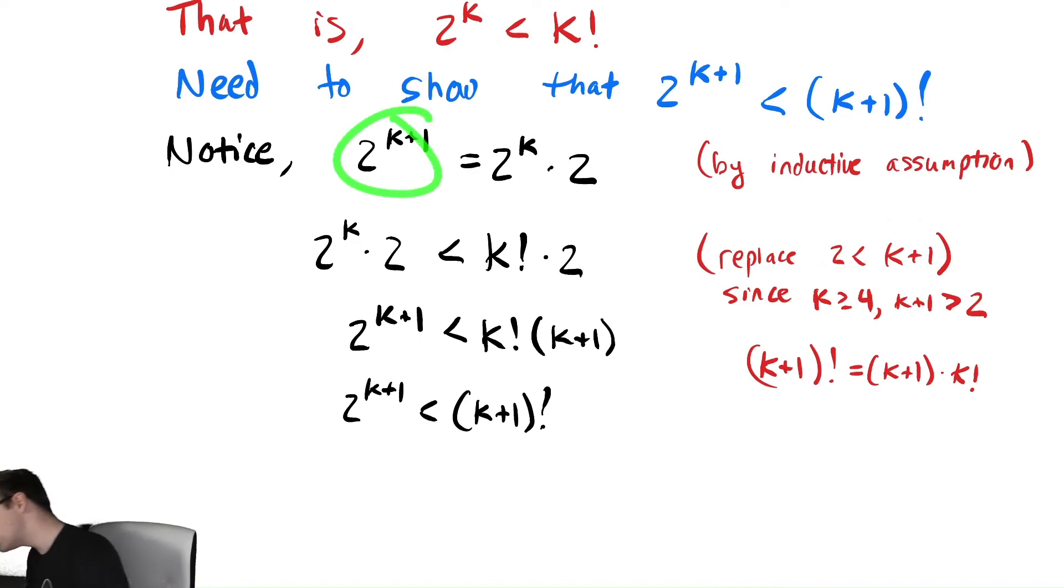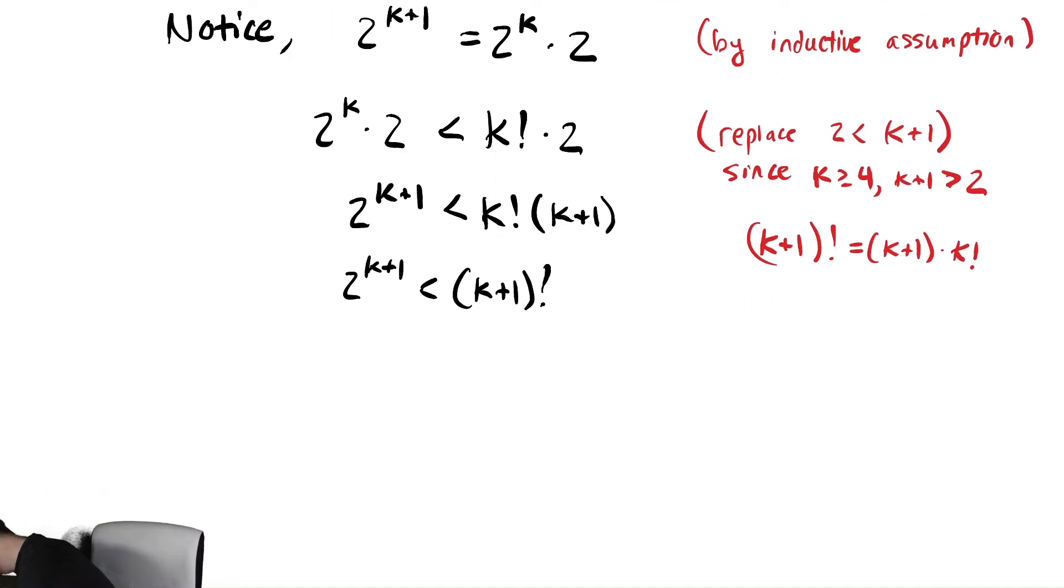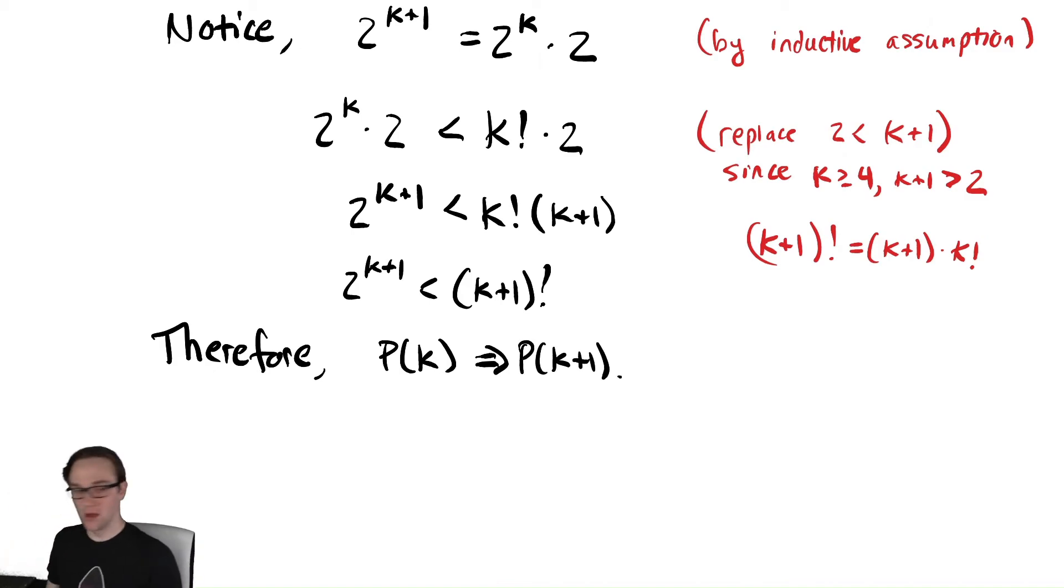So I can rewrite that right hand side is exactly (k+1) factorial. Therefore, starting with 2^(k+1), I used my inductive assumption and I used the fact that the value of k was at least so large to show that it was less than (k+1) factorial. Therefore, using P(k), I showed that that implied P(k+1). Therefore, P(k) implies P(k+1).